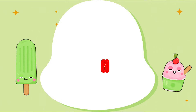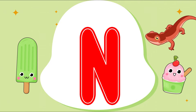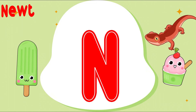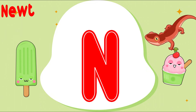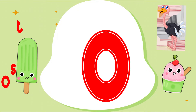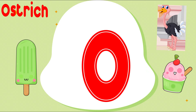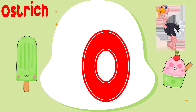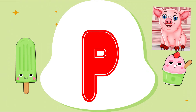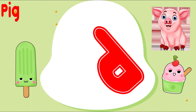N is for Newt. N, N, N, Newt. N, Newt. O is for Ostrich. O, O, Ostrich. O, O, Ostrich. O, Ostrich. P is for Pig. Pig, Pig, Pig.